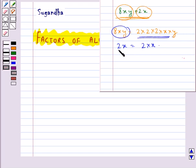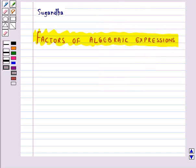And in 2x also, this cannot be factorized further. So 2x and y are the irreducible factors of 8xy, and 2 and x are the irreducible factors of 2x. Now let's define an irreducible factor.